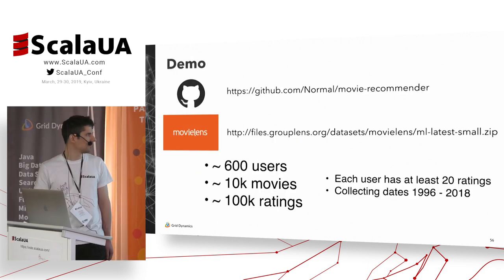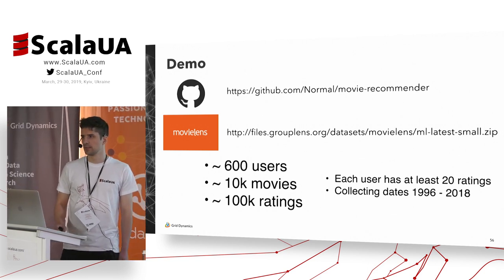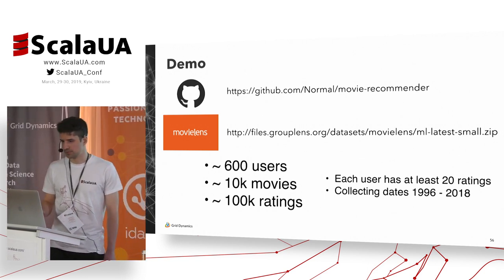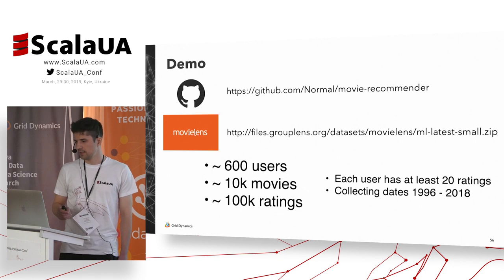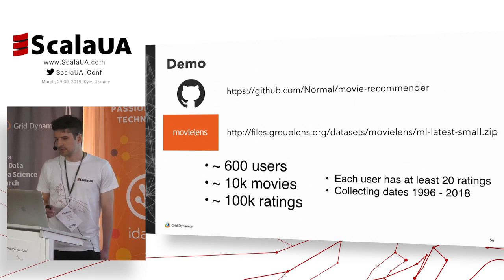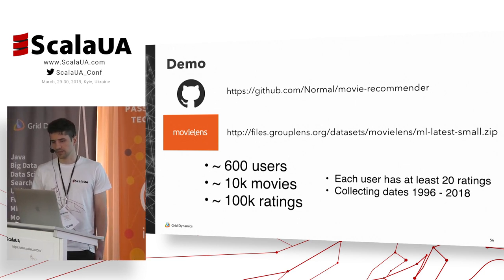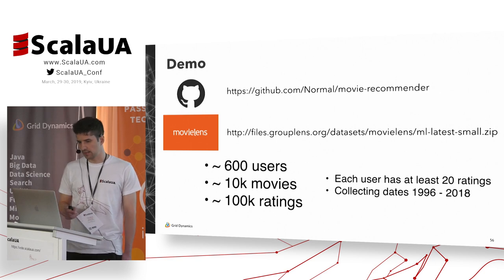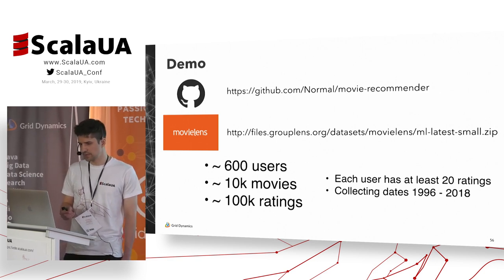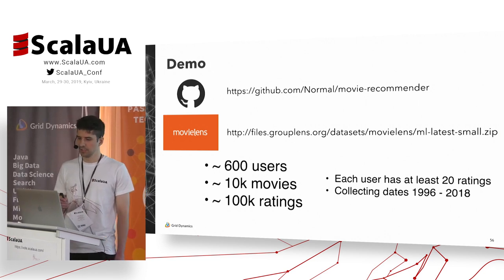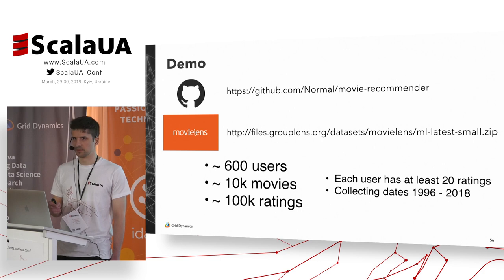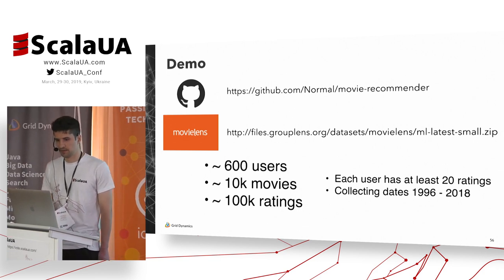Now I want to show a demo. For the demo, I took free data from MovieLens — a dataset collecting ratings from 1996 to 2018. It has 600 users and 10,000 movies, and each user has at least 20 ratings.